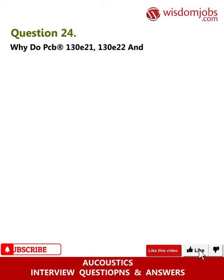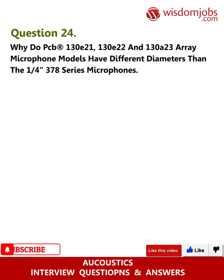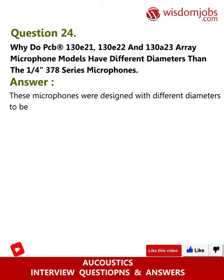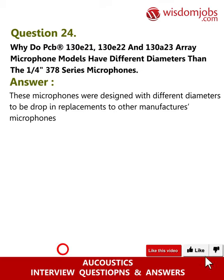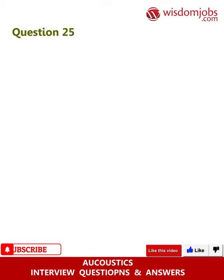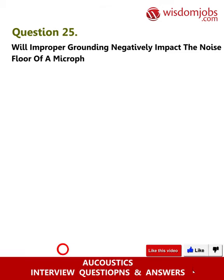Question 24: Why do PCB 130E21, 130E22, and 130A23 array microphone models have different diameters than the one-quarter-inch 378 series microphones? Answer: These microphones were designed with different diameters to be drop-in replacements for other manufacturers' microphones. This eliminates the need to change holders or change the setup.